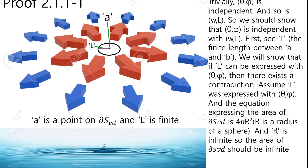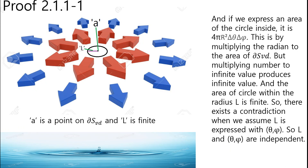We should show that Zeta Phi is independent with omega L. First, see L — the finite length between A and B. We will show that if L can be expressed with Zeta Phi, then there exists a contradiction. Assume L was expressed with Zeta Phi, and the equation expressing the area of DS3D is 4πR², and R is infinite, so the area of DS3D should be infinite. If we express the area of the circle inside, this is 4πR² · ΔZeta · ΔPhi. But multiplying a number to an infinite value produces an infinite value, and the area of the circle within radius L is finite. So there exists a contradiction when we assume L is expressed with Zeta Phi. So L and Zeta Phi are independent.